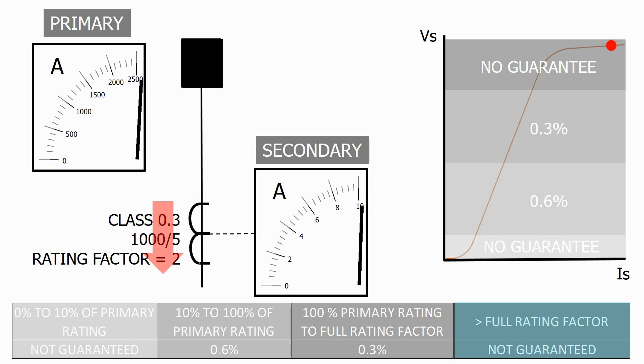This class 0.3 metering current transformer tends to be used on lower voltage less advanced metering systems. On higher voltage systems this lack of accuracy during key parts of the current range isn't good enough and we therefore need something a bit more accurate.